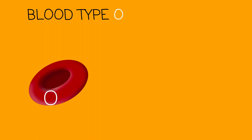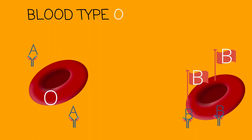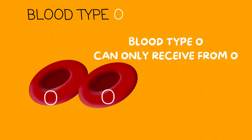Lastly, we have blood type O. Blood type O has both A and B antibodies. So anything flagged with an A or a B will be rejected and blood type O will fight it. So if an A comes along, it will be rejected. If a B comes along, it will be rejected. If an AB comes along, it will be rejected. But if an O comes along, it will be accepted. Blood type O will only receive from blood type O.